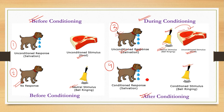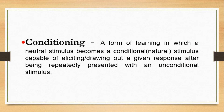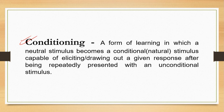So here we understand what conditioning is through a real example of a stimulus and a response in Pavlov's experiment. We can now define conditioning more precisely: conditioning is a form of learning in which a neutral stimulus becomes a conditioned stimulus. Through the experiment, we understood what is an unconditioned stimulus, a conditioned stimulus, and a neutral stimulus. Now, having understood Pavlov's experiment, we will look at the educational implications of Pavlov's Classical Conditioning Theory.